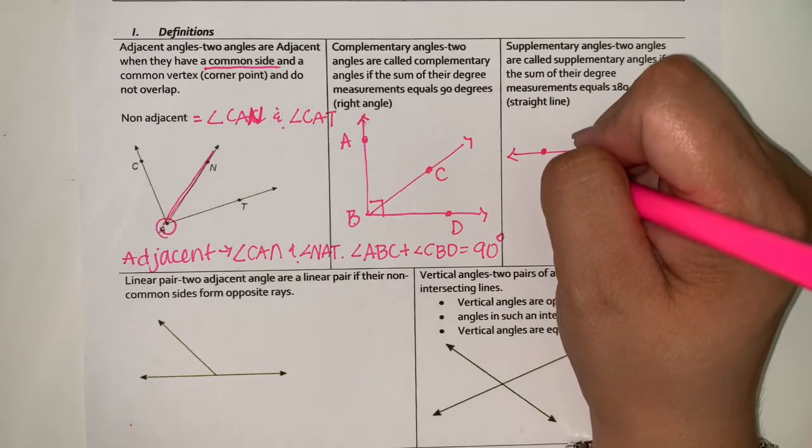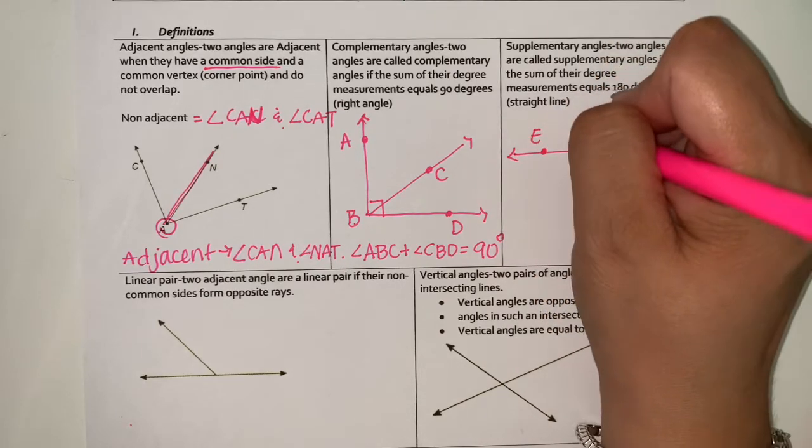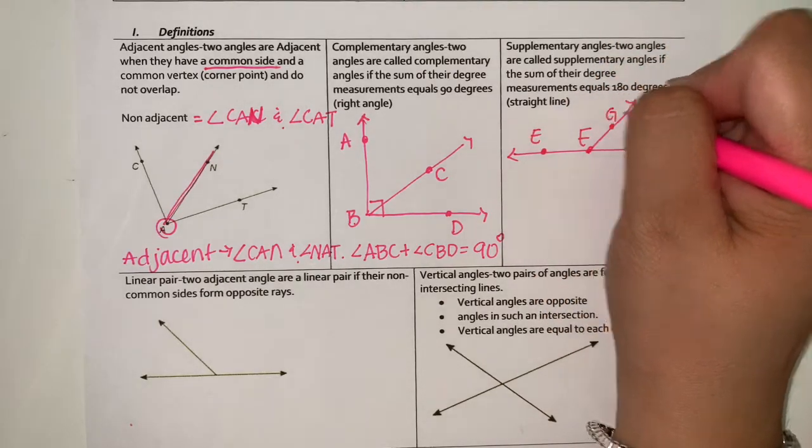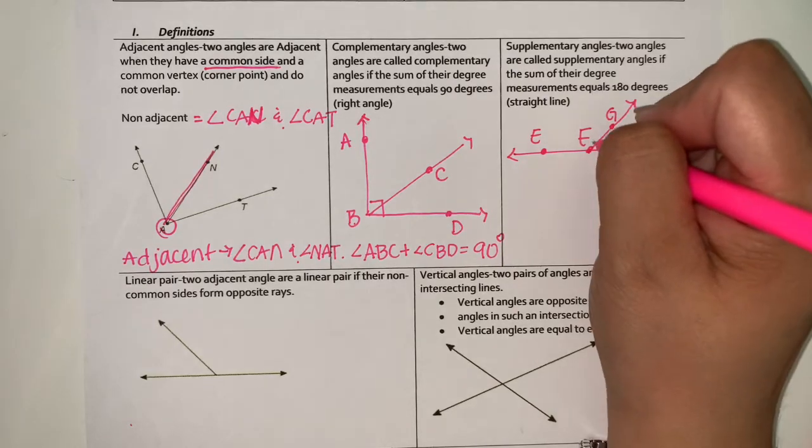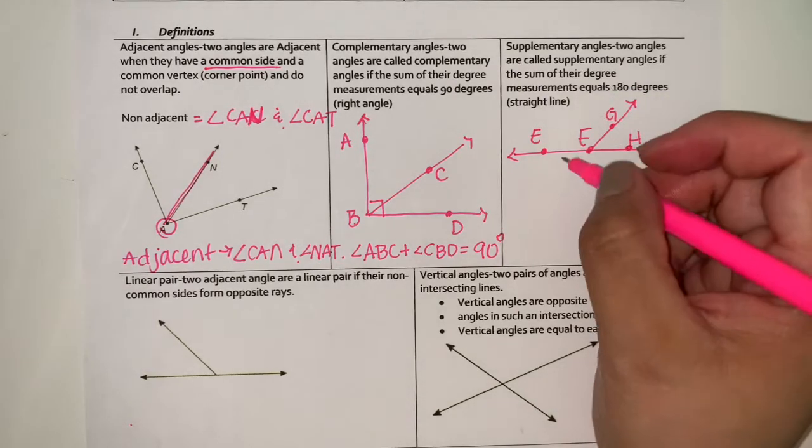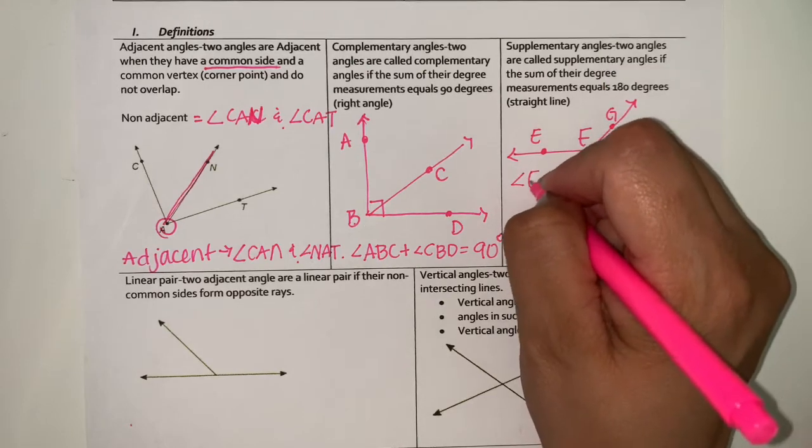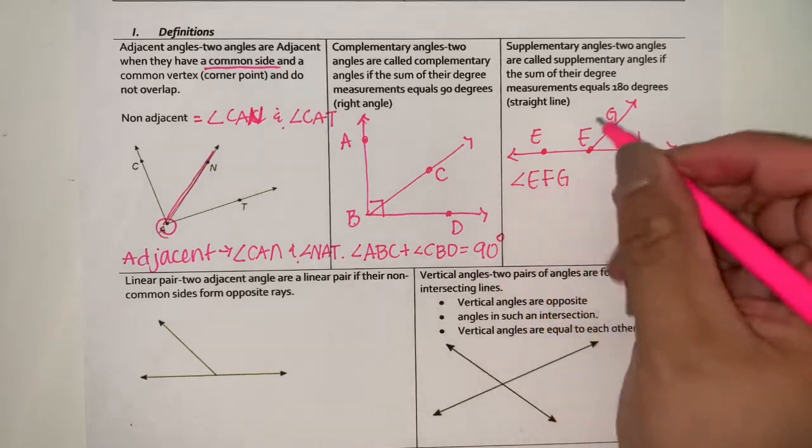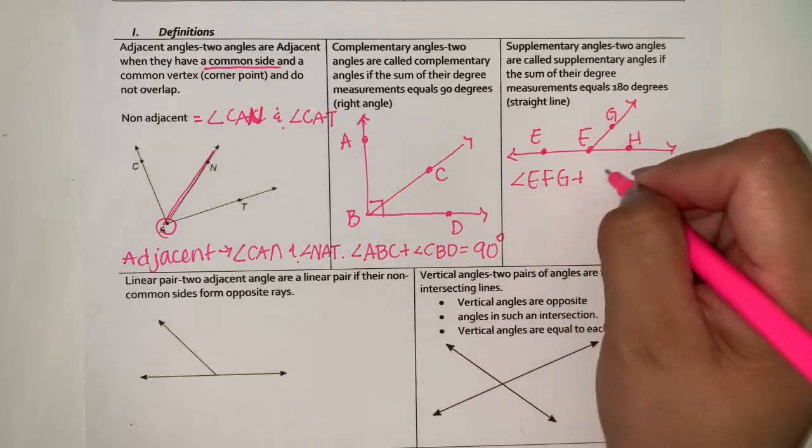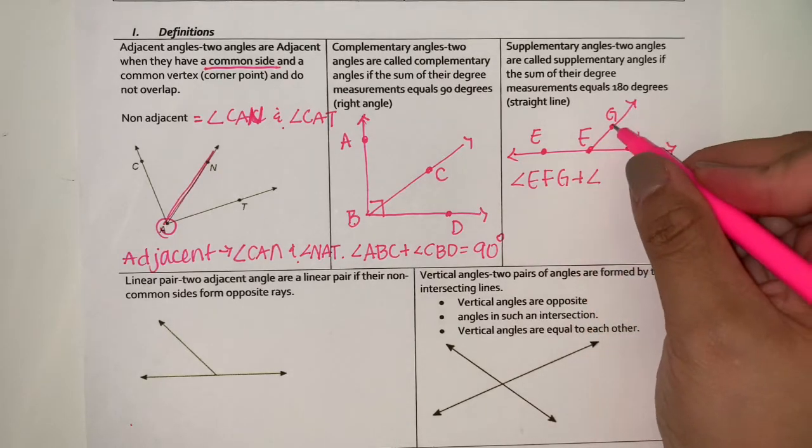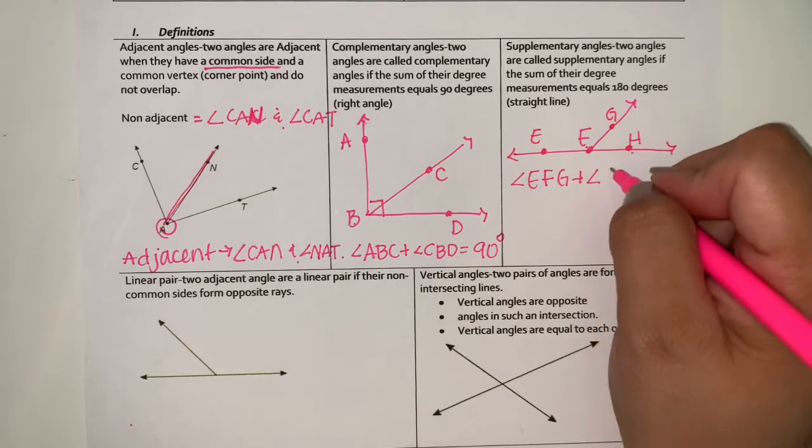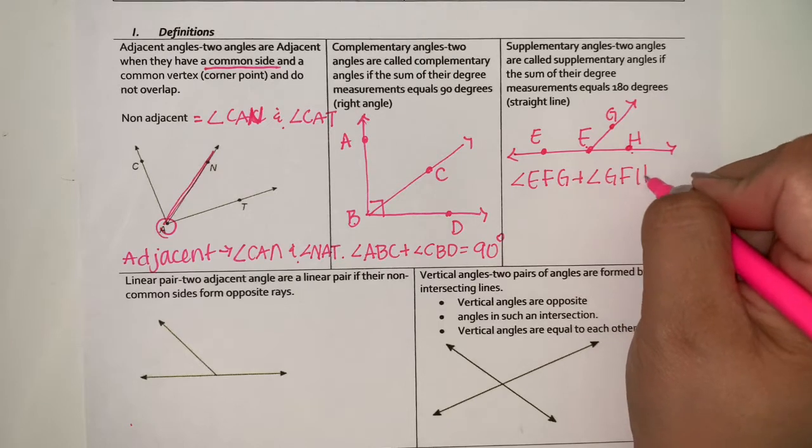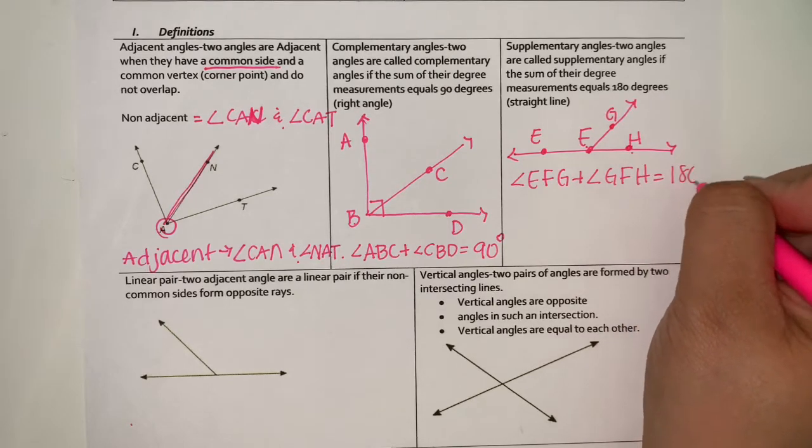Let's say we label these. What we are saying is angle EFG when added to GFH will be 180 degrees.